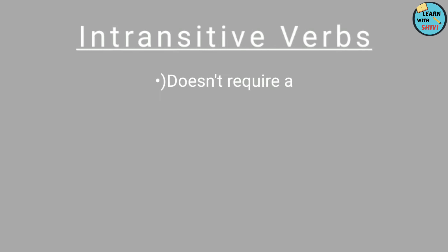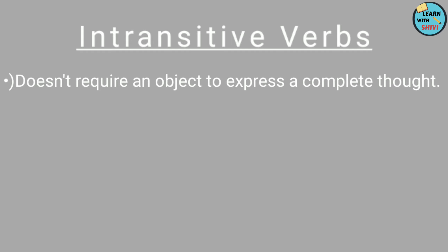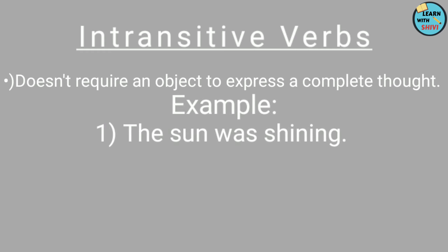Now let's have a look at intransitive verbs. These are those verbs which do not require any object to construct a meaningful sentence; intransitive verbs are meaningful in themselves. For example: 'The sun was shining.' What is the verb? It is 'shining'. Does it have any object? No. Is it a meaningful sentence? Yes. Hence, 'shining' is an intransitive verb.